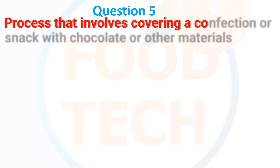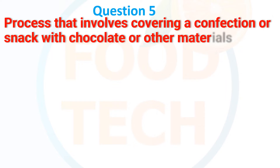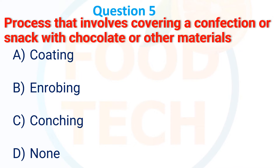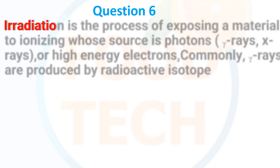Next MCQ: The process that involves covering a confection or snack with chocolate or other materials is called what? Options: (A) Coating, (B) Enrobing, (C) Conching, and (D) None. The correct answer is B — enrobing.